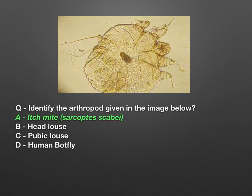Now the image is showing an arthropod and we have to identify it. The options are itch mite, Sarcoptes scabiei, head louse, pubic louse, and human botfly. The picture is showing that this arthropod is Sarcoptes scabiei, the itch mite, which is also the causative factor for the disease scabies.